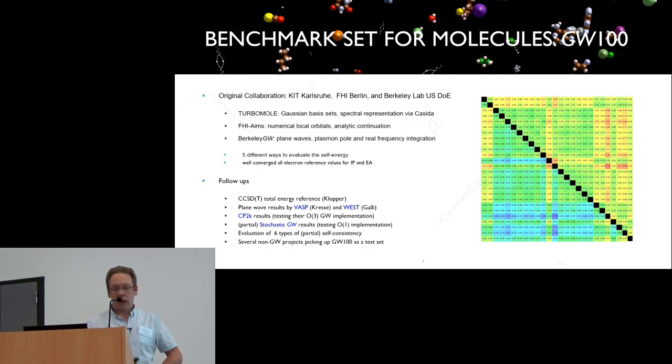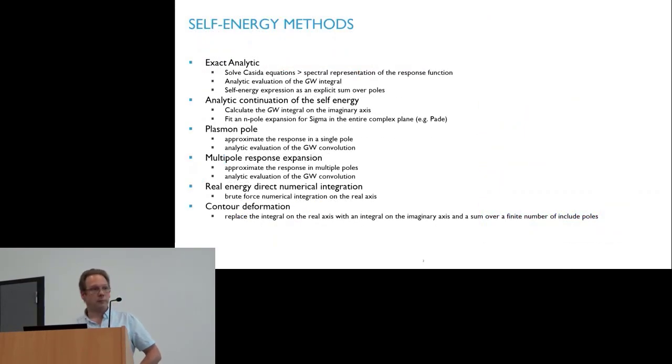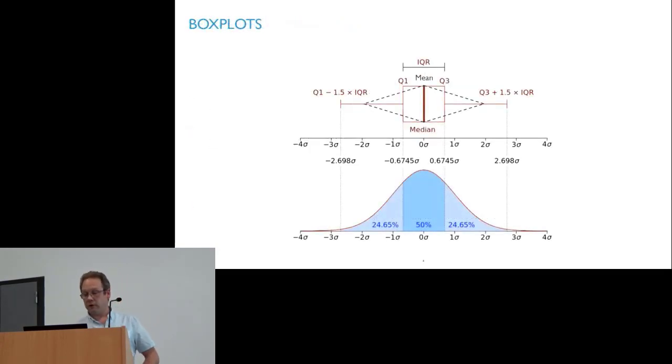After a while I started collecting all the data sets that we already had, and some of them are non-published. By now I have a full database with 25 different data sets. So before we go in, there's just two slides here. I don't have really time, but if you want, since we're recording you can look them up. This is the different ways of doing GW self-energy explained.